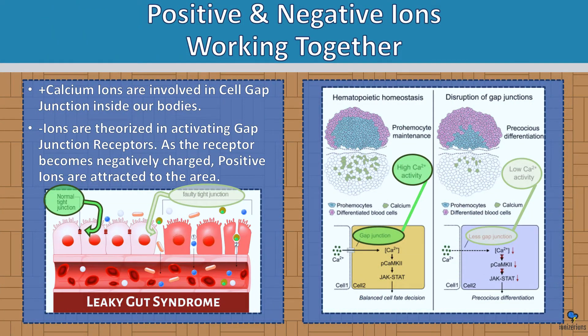Positive and negative ions working together: positive calcium ions are involved in cell gap junctions inside our cells. Negative ions are theorized to activate gap junction receptors — as the receptor becomes negatively charged, positive ions are attracted to the area. Some cells are very tightly together and some are loose; this has to do with calcium positive ion activity. This is just an example of how ions maintain our bodies.